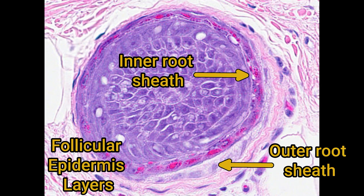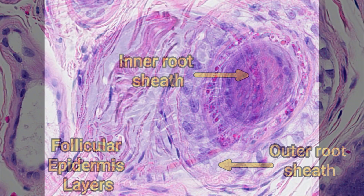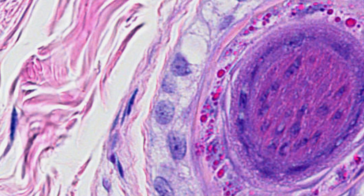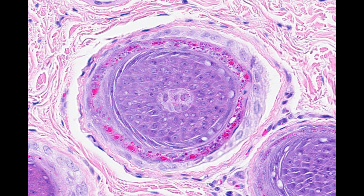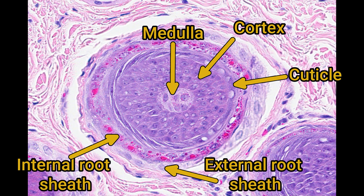The inner root sheath is distinguished by cells that contain bright eosinophilic cytoplasmic granules — trichohyalin granules. The outer root sheath is the layer of cells that contacts the adjacent dermis. Just as with the epidermis, there is a basement membrane between the outer root sheath and the dermis. At this level the layers can be difficult to distinguish, but moving a little further up you'll be more convinced. There is no separation yet between the inner root sheath and the hair shaft.